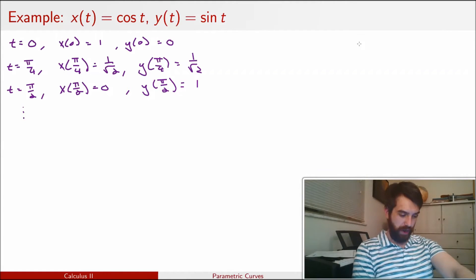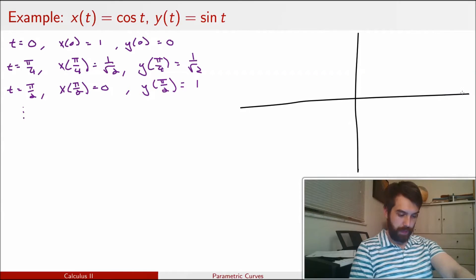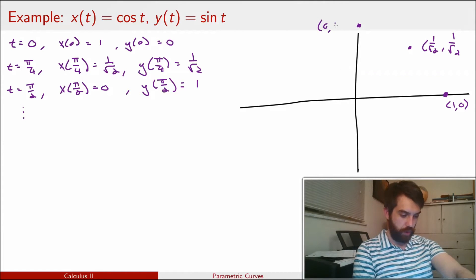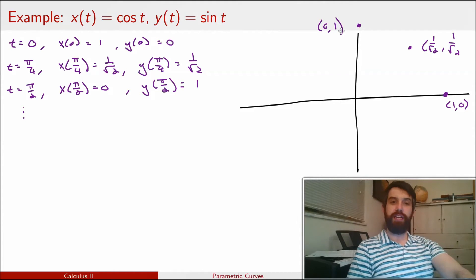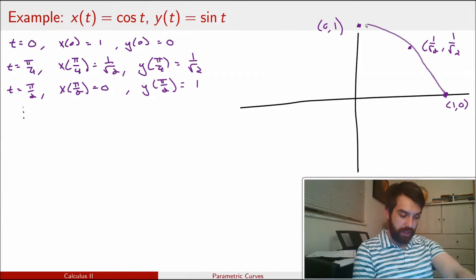Okay, so we've got a couple points, and let's see whether we can put them on a graph. I have this point, which is given by 1, 0. I have this point over here, which is 1 over root 2, 1 over root 2. I have this point up here, which is the point 0, 1. And it kind of looks like I could connect these together into a big circle.